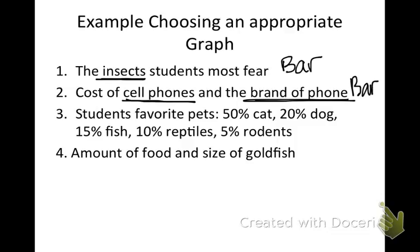Students' favorite pets: 50% cat, 20% dog, 15% fish, 10% reptiles, 5% rodents. Because we're looking at these with percentages, this could be a circle or pie graph. And the last one, amount of food and the size of your goldfish. We're going to make that a line graph because it's very discrete—we're looking at food and the size of a goldfish. Write that down in your notes. If you have questions, write those on the side of your notebook.